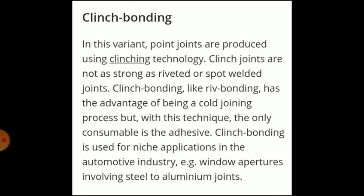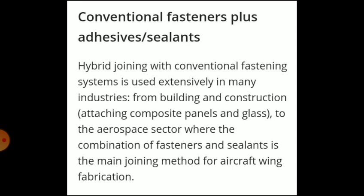Clinch bonding is a combination of clinching with adhesive bonding. Clinch joints are not as strong as riveted or spot welded joints, but clinch bonding, like rivet bonding, has the advantage of being a cold joining process, and the only consumable is the adhesive. Hybrid joining with conventional fastening systems is used extensively in many industries from building and construction to aerospace, where the combination of fasteners and sealants is the main joining method for aircraft wing fabrication.